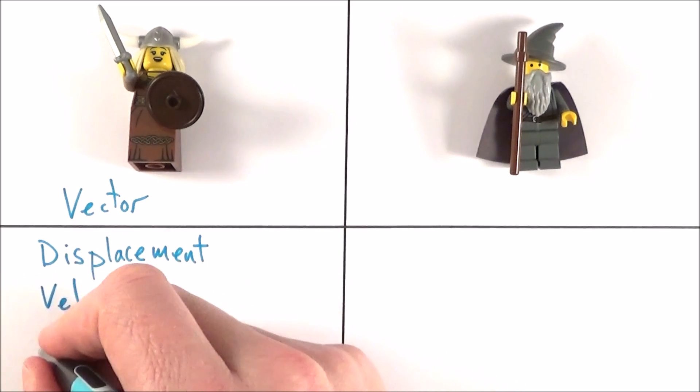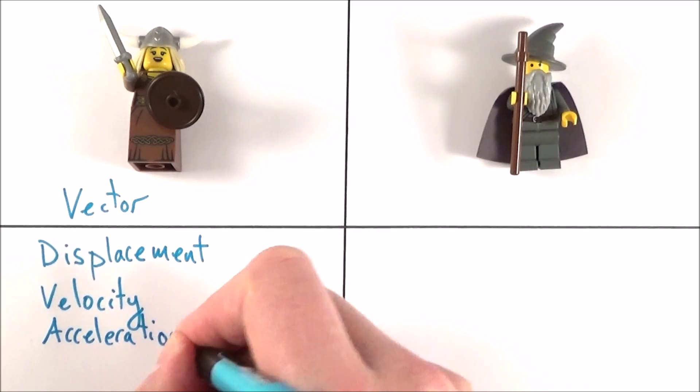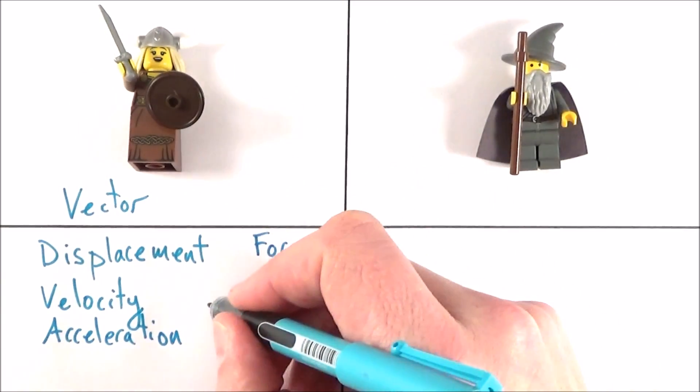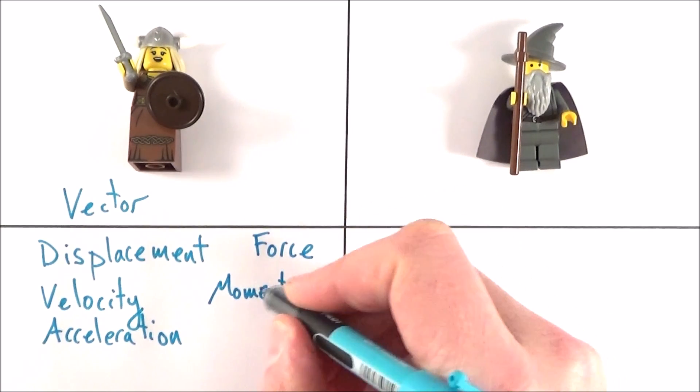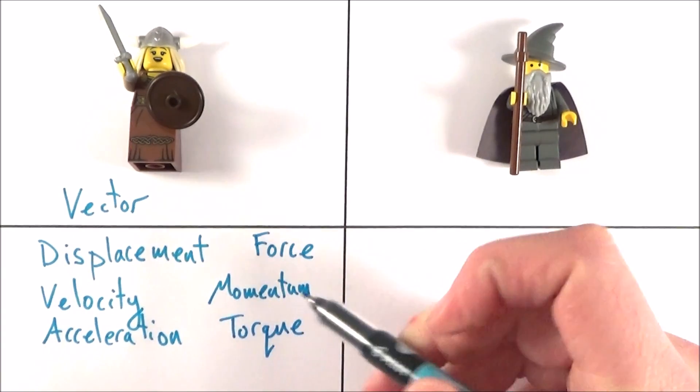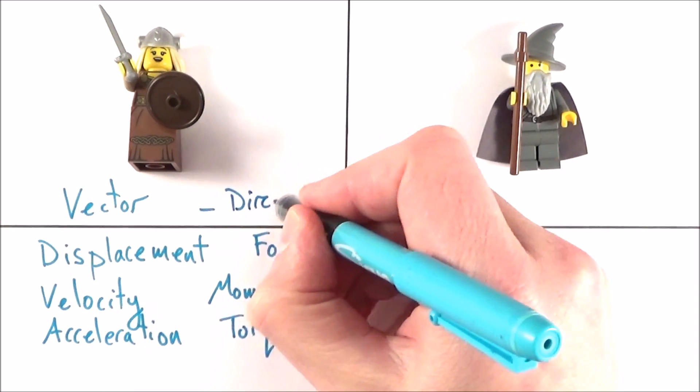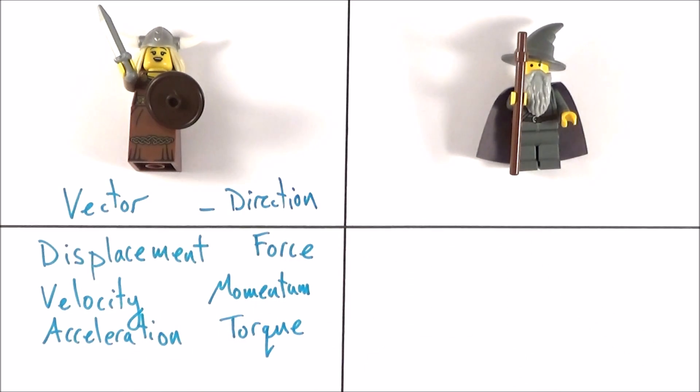We then might go on and think about acceleration, direction, perhaps the force on an object, maybe the momentum, and also things like the torque. So these things here really do depend upon the direction. That is absolutely key. A momentum to the left is going to be very different to the momentum to the right.